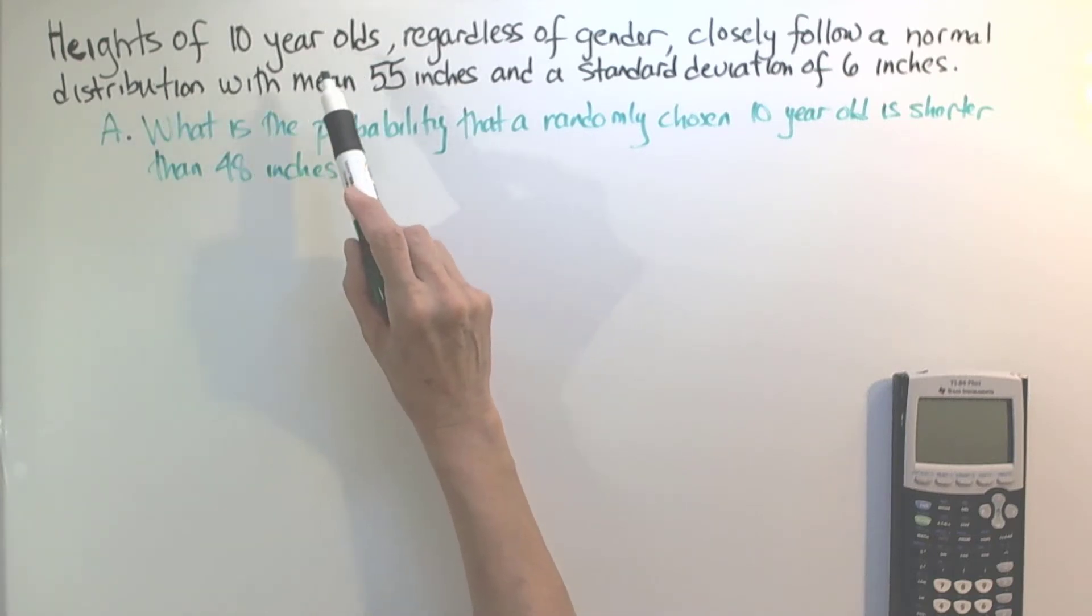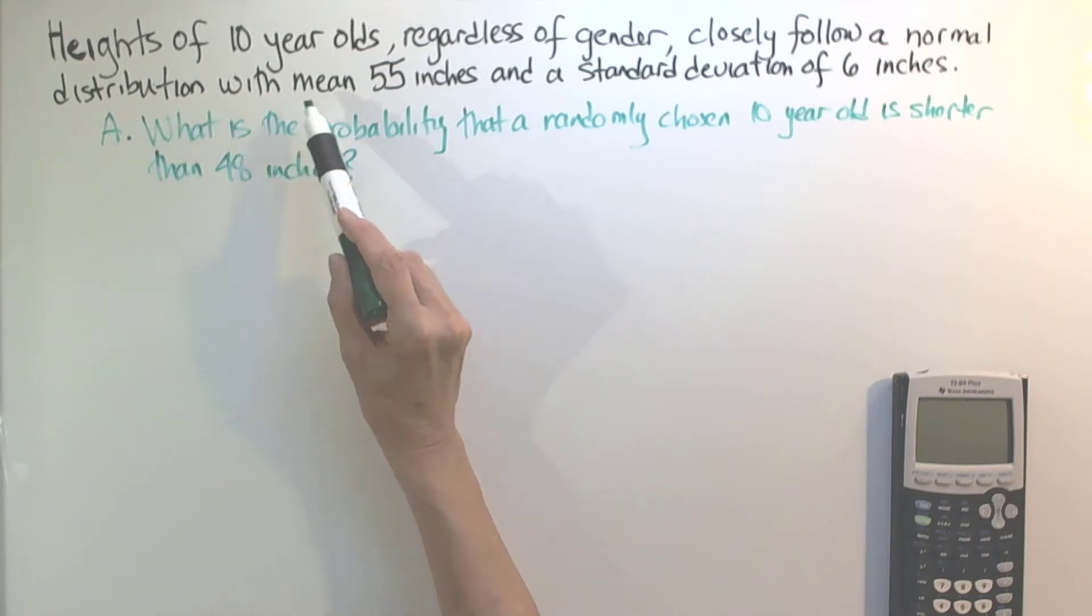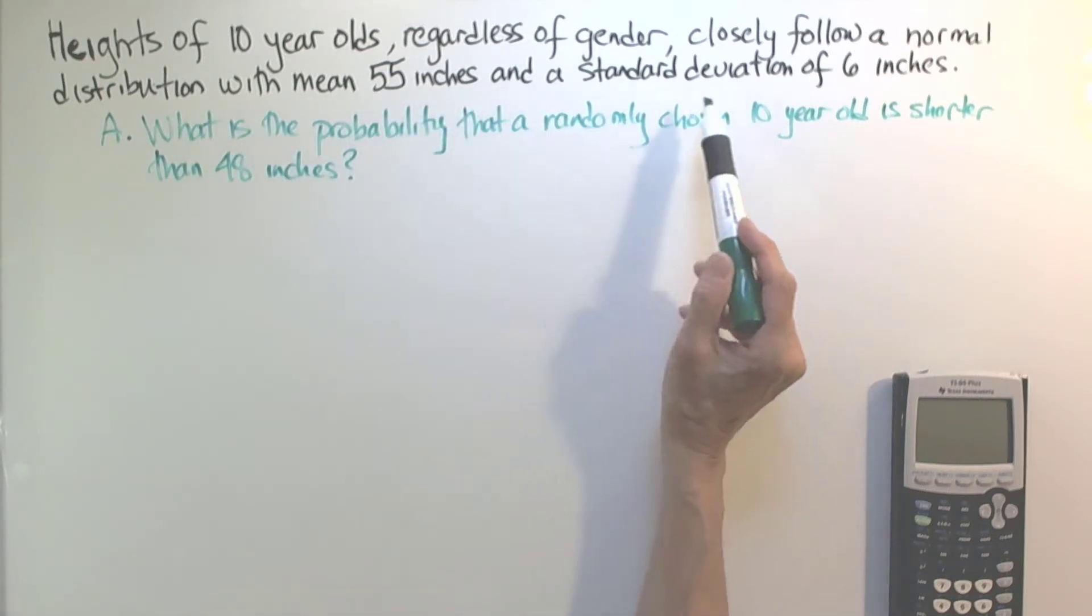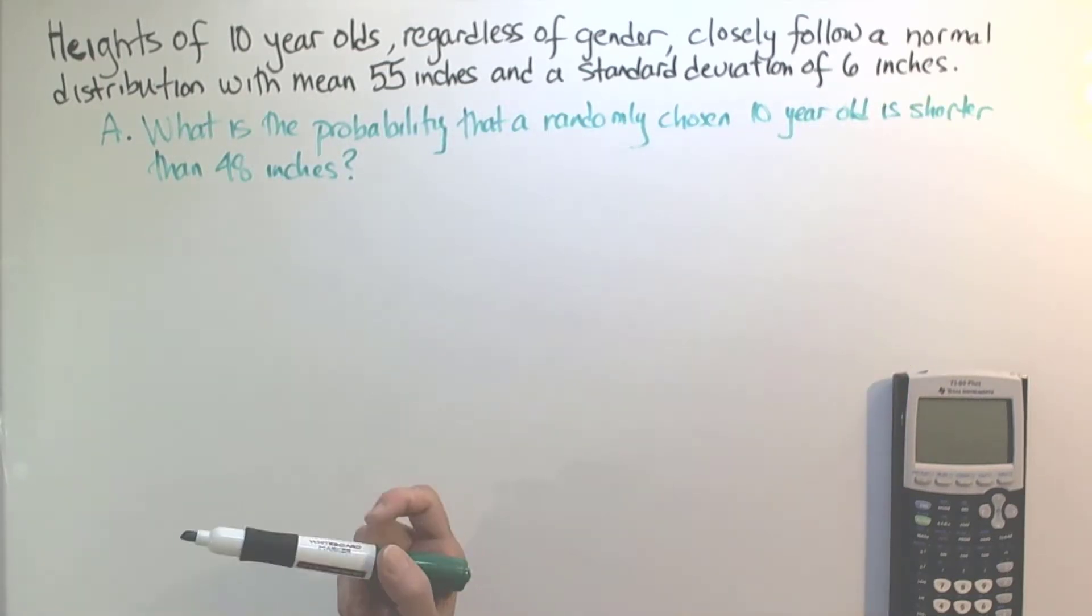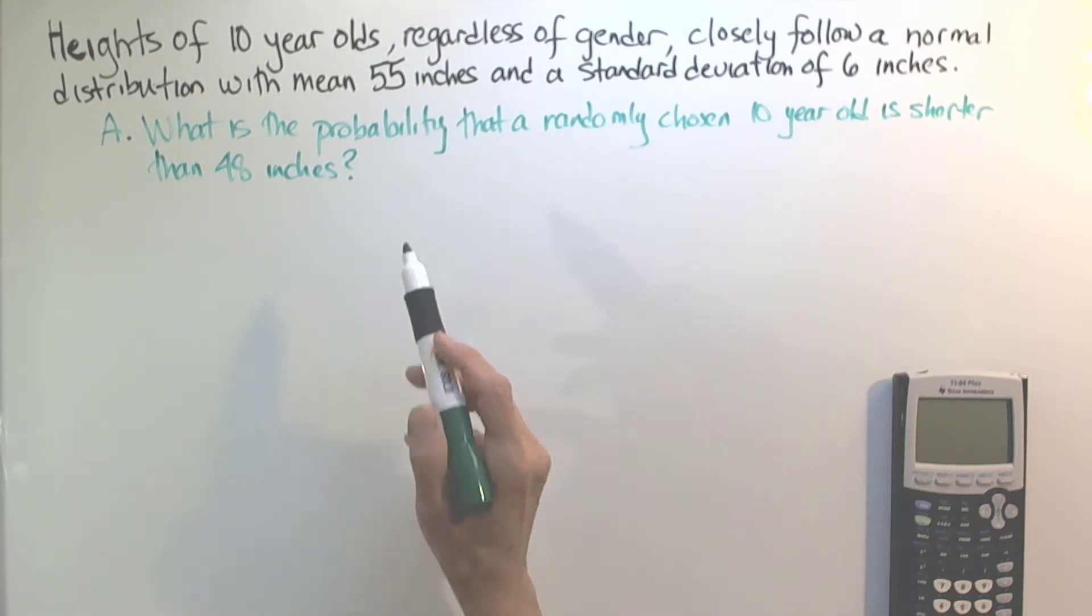Heights of 10 year olds, regardless of gender, closely follow a normal distribution with mean 55 inches and a standard deviation of 6 inches. The first question we want to answer is, what is the probability that a randomly chosen 10 year old is shorter than 48 inches?